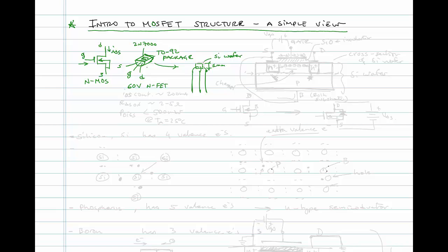The 2N7000 is a 60-volt N-channel MOSFET. It has a continuous IDS of around 200 milliamps, an RDS on-resistance of somewhere around 2 to 5 ohms, and a maximum power dissipation of less than 500 milliwatts, assuming ambient temperature of 25 degrees Celsius.